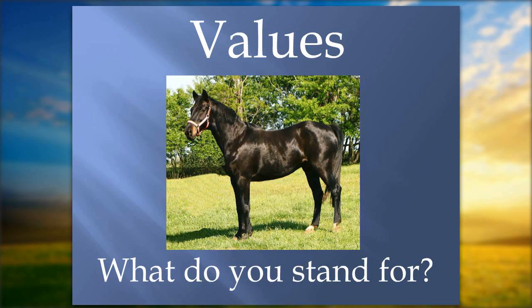Another thing to include in your business plan is your values — what do you stand for? An example: Brook Hill Farm exists to carry out and inspire the love, care, and responsible stewardship of horses and people by staff, volunteers, and participants. You might also include that you do not discriminate on the basis of race, color, national origin, sex, religion, etc. These are all values, and they're a good thing to put in your business plan so donors can see exactly what you stand for.